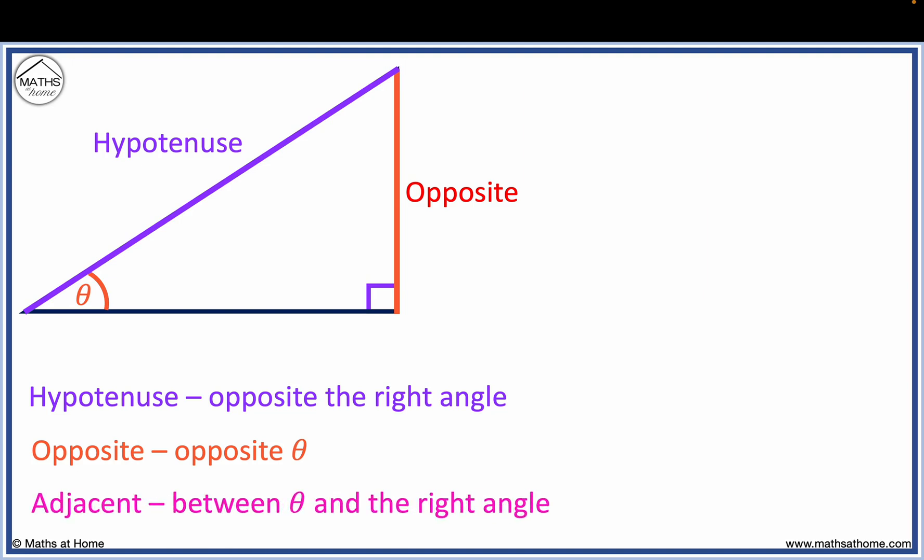Finally we have the adjacent side, which is always in between the angle theta and the right angle. Here is theta, and here is the right angle. So the adjacent side connects these angles and is here.